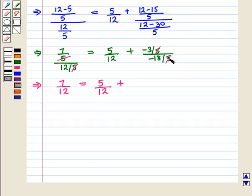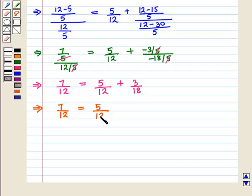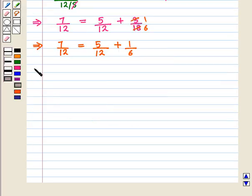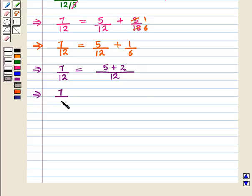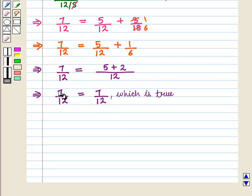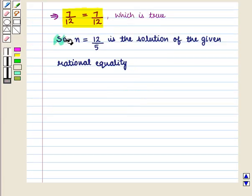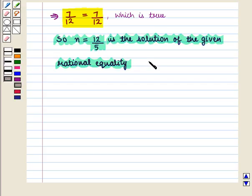Now minus 3 upon minus 18 can be written as 3 upon 18, as the negative signs cancel. This further implies 7 upon 12 equals 5 upon 12 plus 1 upon 6. Taking LCM, 7 upon 12 equals 5 plus 2 upon 12, which implies 7 upon 12 equals 7 upon 12, which is true. So n equals 12 upon 5 is the solution of the given rational equality. This is the required answer.